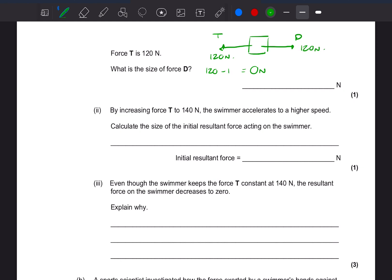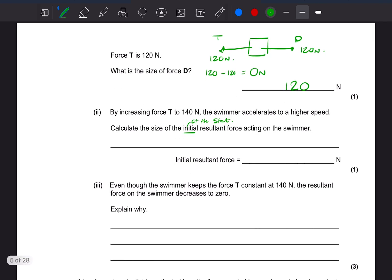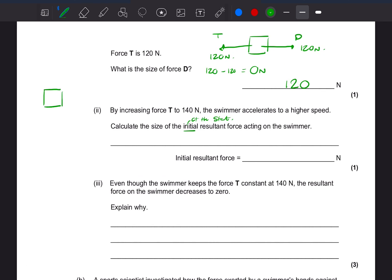By increasing force T to 140 newtons, the swimmer accelerates to a higher speed. Calculate the size of the initial resultant force acting on the swimmer. So initial is at the start. So we could draw this diagram out. So it says force T, so that was that way, went to 140 newtons. And we know that force D was originally 120 newtons. So we would do 140 minus 120, leaving us 20 newtons.